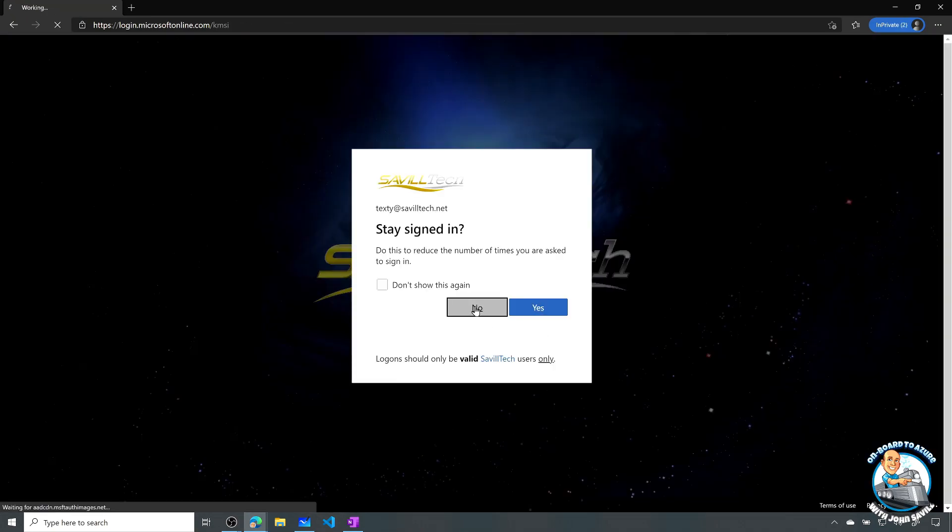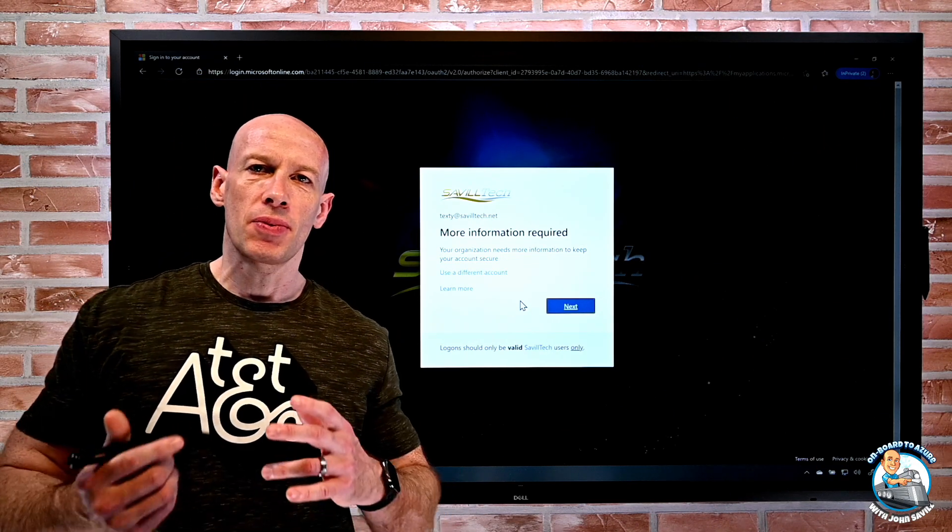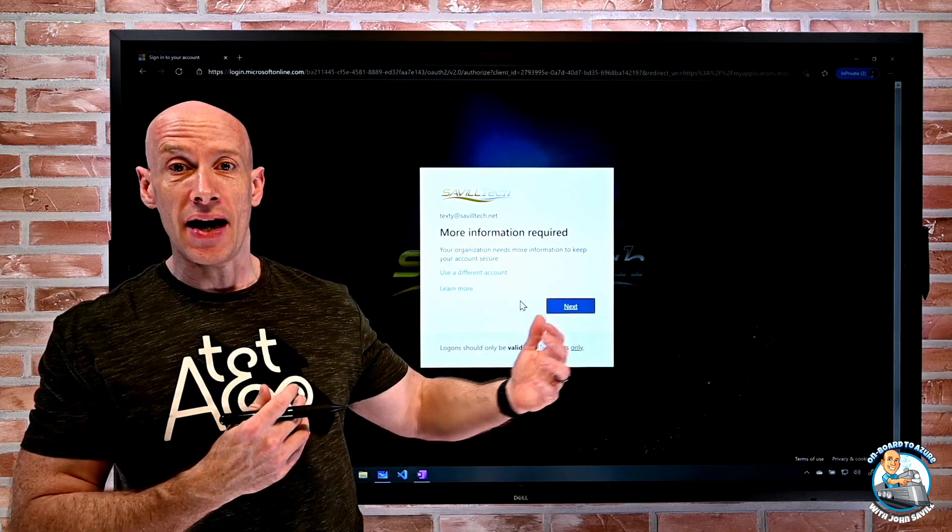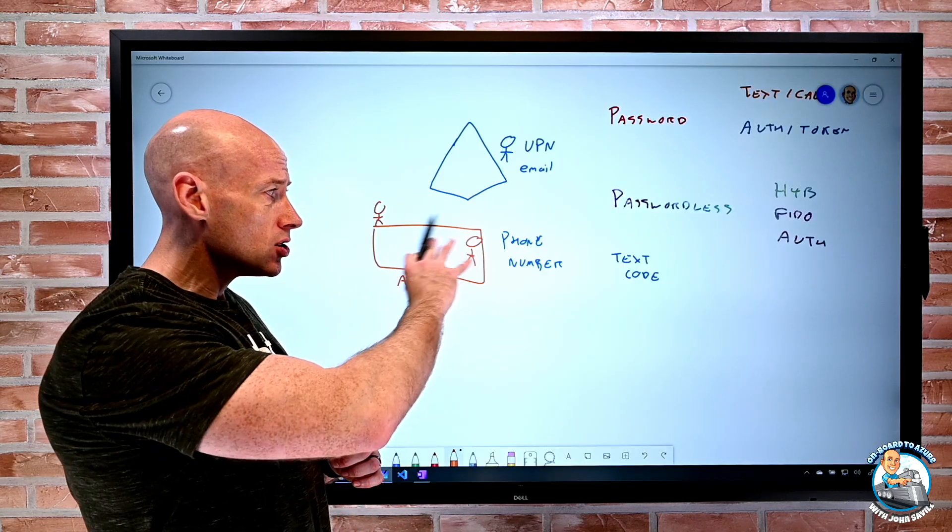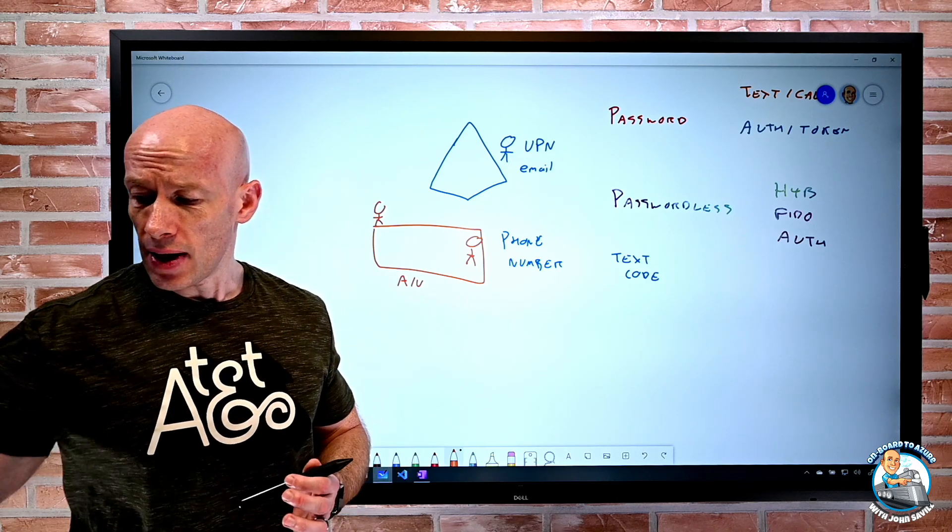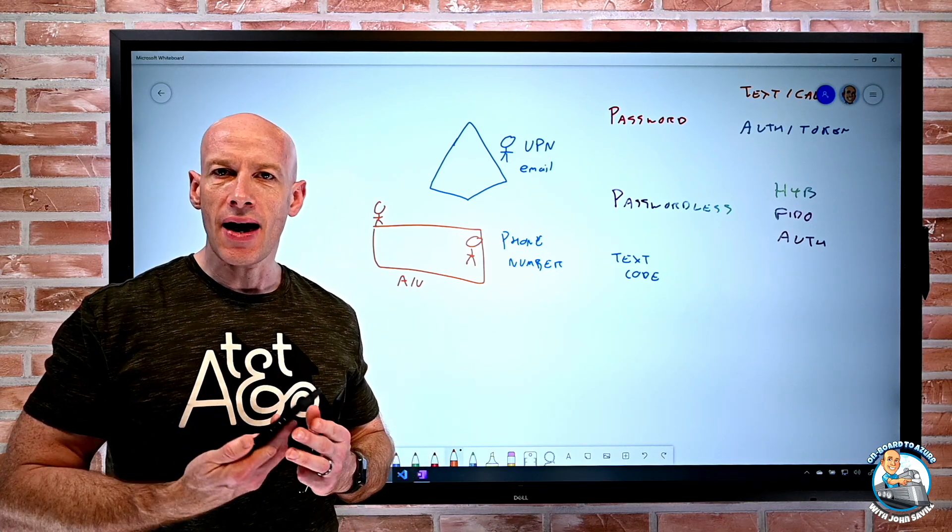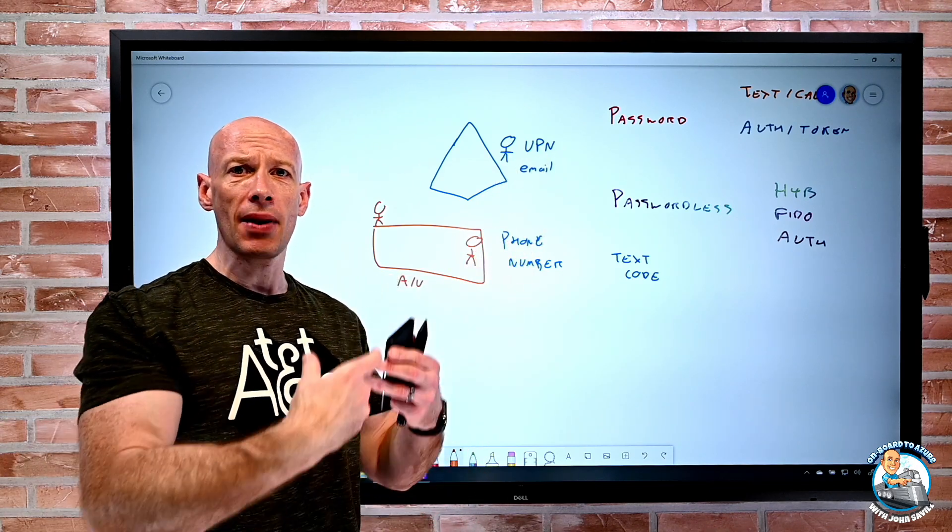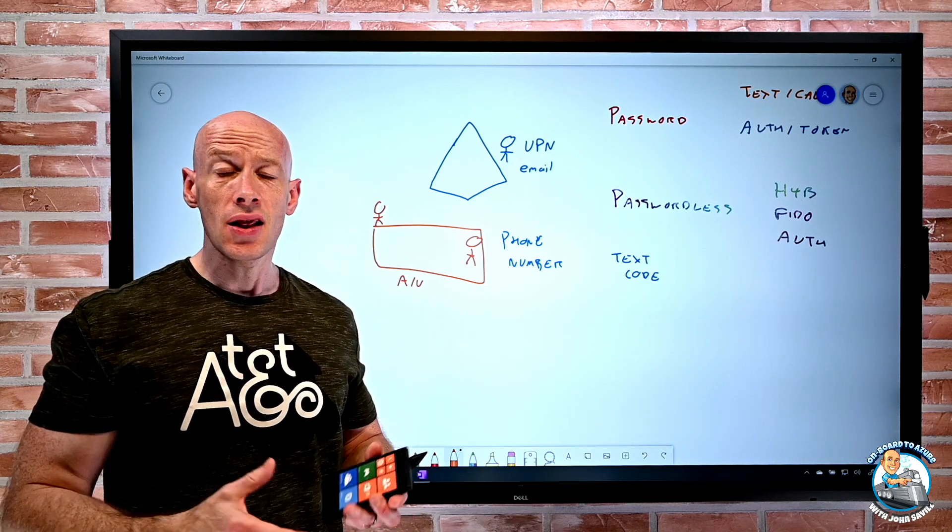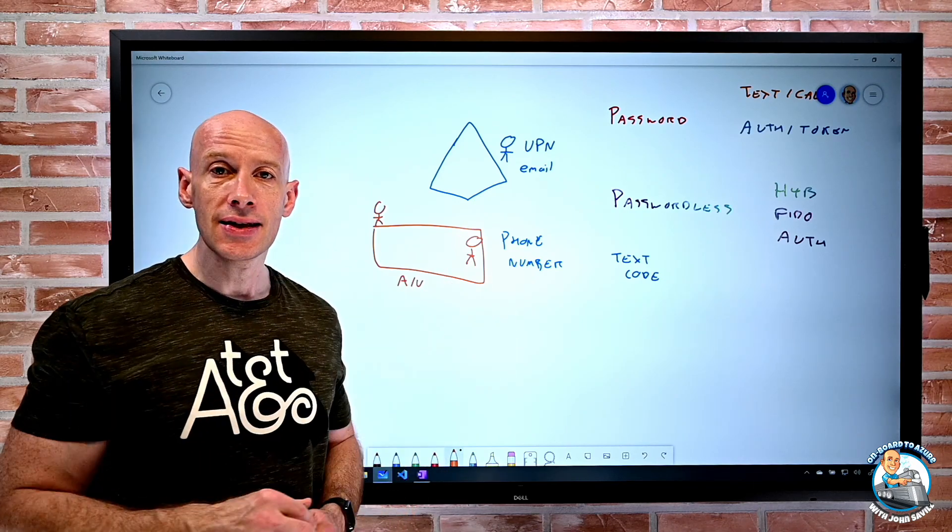Now it's asking do I want to stay signed in. I'll say no. But essentially that's it. Now again it's going through kind of at this point, hey more information. And this was probably going to error anyway because I have other things set up about MFA and requirements. But you get the idea of that logon experience for these users. All I had to know was my phone number. So for those kind of frontline workers, if I want them to just have to know their phone number and not mess around knowing a UPN or an email or having to think about a separate password, now I can just light this up. So with my phone and receiving a text message I can authenticate and access those services.